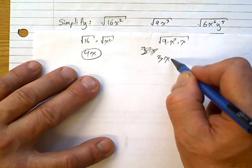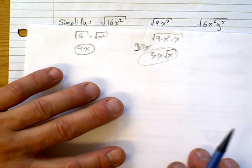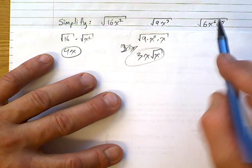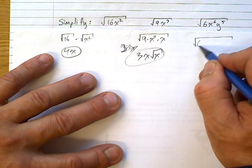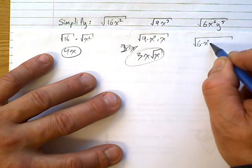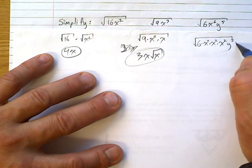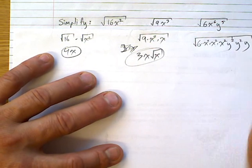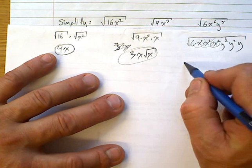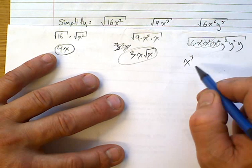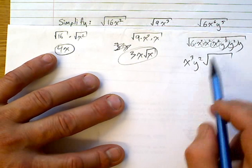For √(6x⁶y⁵): you can't simplify the 6, but x⁶ = x² · x² · x², giving x³ outside. For y⁵ = y² · y² · y, giving y² outside with y remaining inside. So the answer is x³y²√(6y).